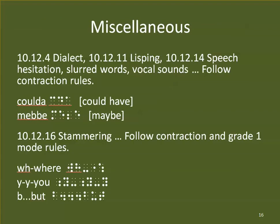There are a bunch of obscure little rules — if you come across these situations, study them in the code book or a more in-depth course. Rules cover dialect, lisping, speech hesitation, slurred words, and vocal sounds — all follow contraction rules. If we have 'could' to mean 'could have,' we can use the C-D contraction. For stammering, we have the added component of needing grade one mode, so we need to know grade one mode rules thoroughly.